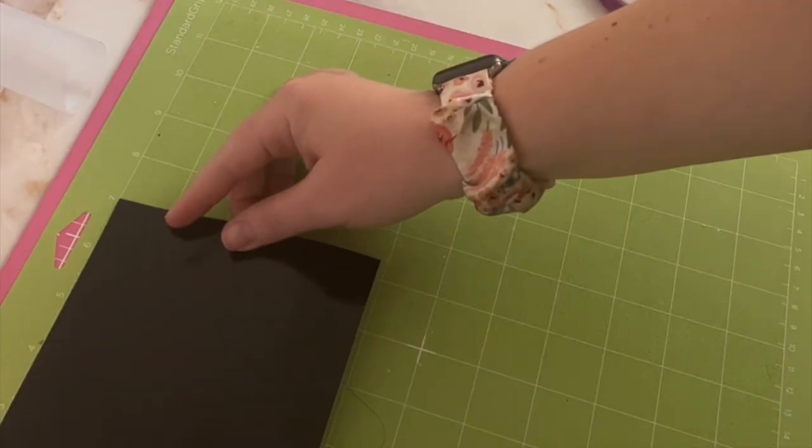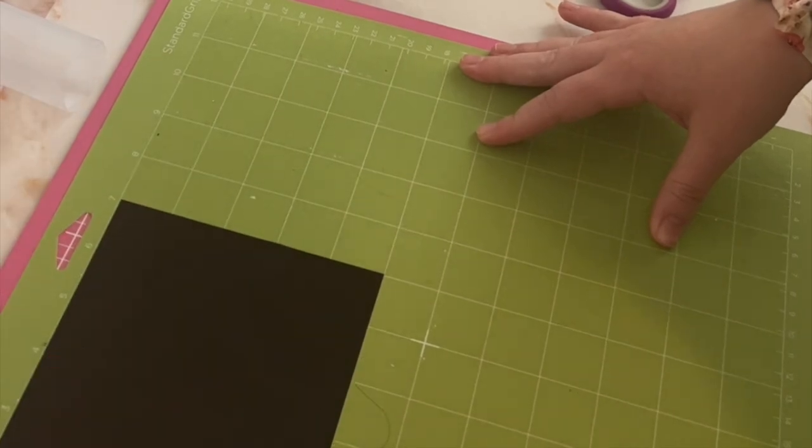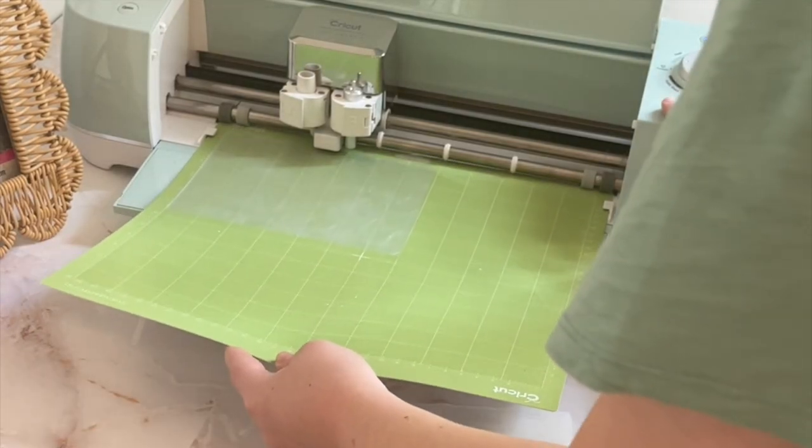I'm with me as I make a window cling suncatcher today. All of the supplies will be listed below as well as a link to my blog post if you prefer written instructions.